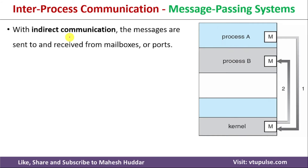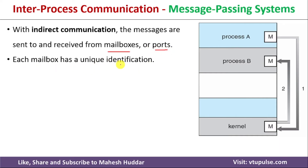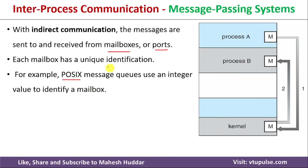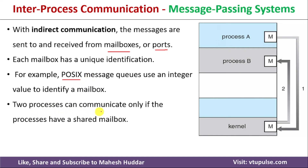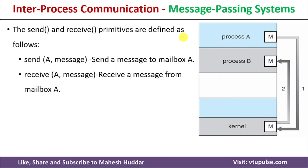In Indirect Communication, messages are sent and received using mailboxes or ports. Each mailbox has a unique identification number — in POSIX, integer numbers are used to identify mailboxes. Two processes can communicate only if they share a mailbox. For example, Send(A, message) means send a message to mailbox A, and Receive(A, message) means the process receives a message from mailbox A.